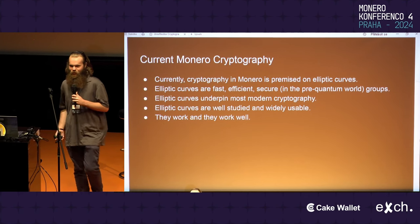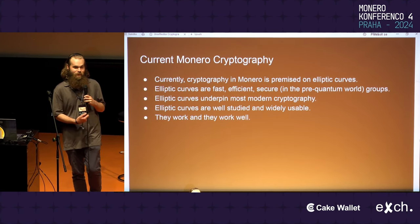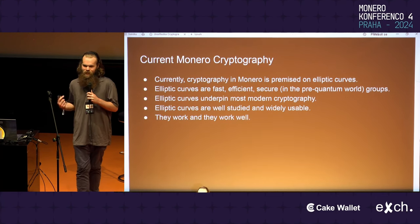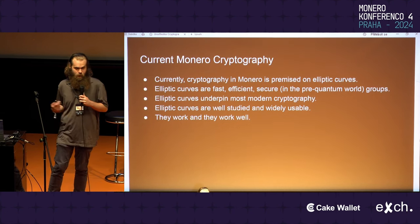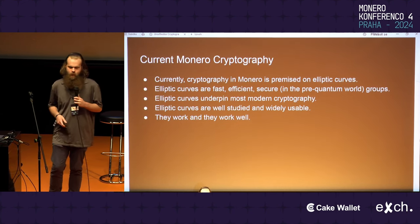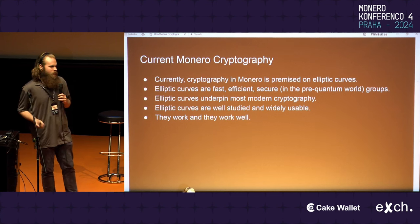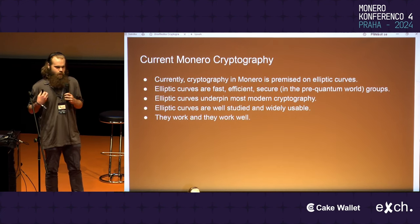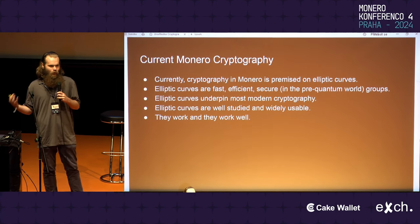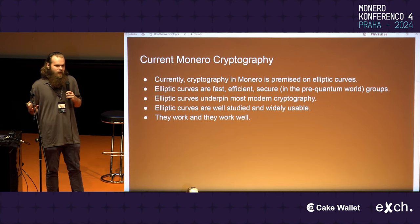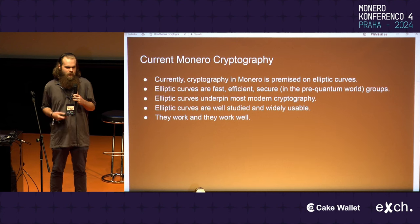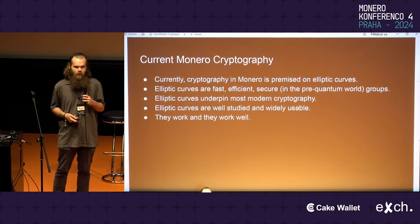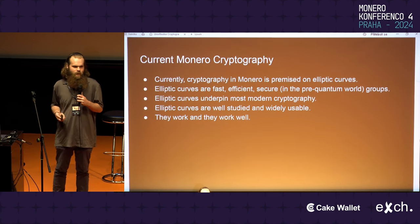Current Monero cryptography is premised on elliptic curves. They're fast, efficient, and secure in the pre-quantum world. Groups — just being this mathematical notion — underpin most modern cryptography. They're well-studied and widely usable. We could go back to RSA, but Monero cryptography would be 10 times larger and 100 times slower. Why would we do that when elliptic curves just work?